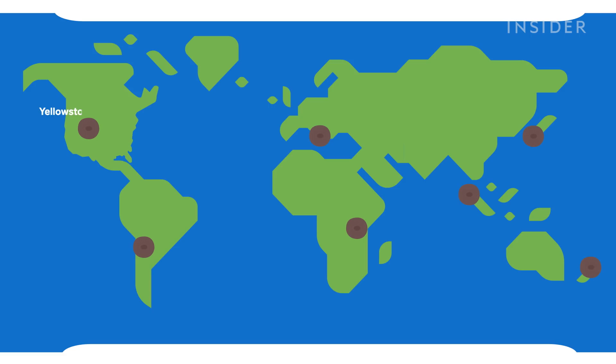For example, there's Yellowstone in the US, Ngorongoro in Tanzania, and Toba in Indonesia. So basically, no matter where you are, you're out of luck.